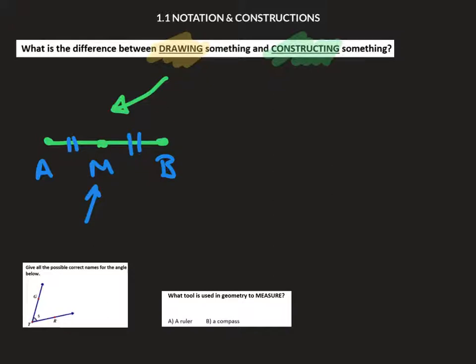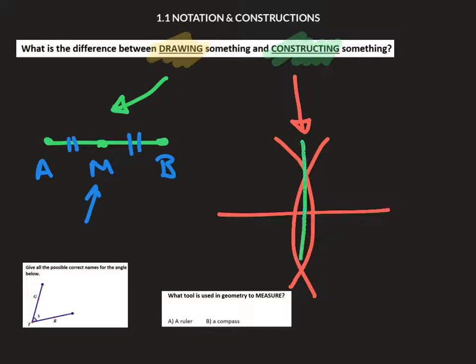To construct something is a much more powerful item. It really refers to this idea of you actually pulling out your compass and your ruler. If you're constructing the midpoint, you're going to take your arcs and physically construct that moment in time to find the midpoint.